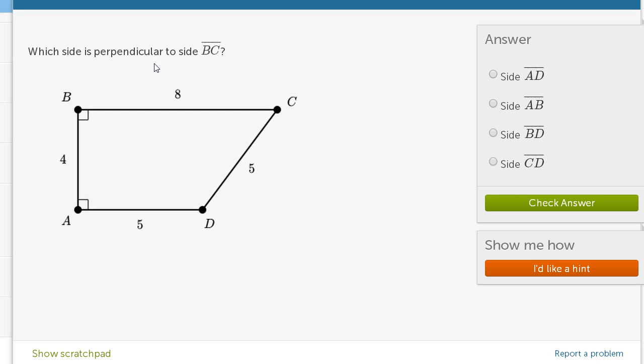Which side is perpendicular to side BC? So BC is this line segment right over here. And for another segment to be perpendicular to it, perpendicular just means that the two segments need to intersect at a right angle or at a 90 degree angle.